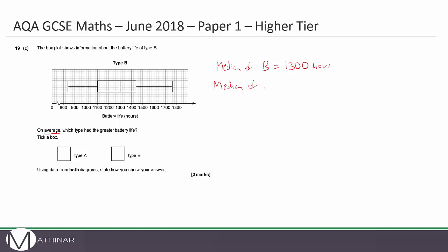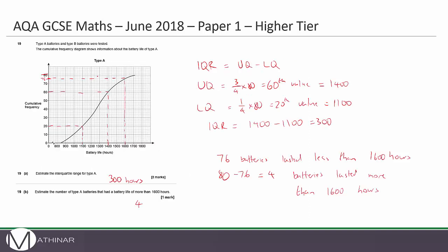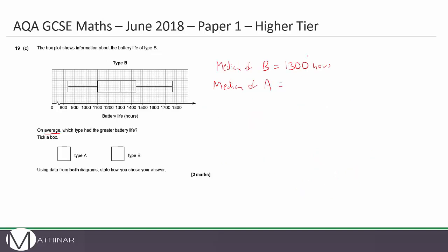Now we need to work out the median of A. So the median of A is halfway along. So half of 80 is 40. So we go along at 40. And then if we go down, I would say that's about 1,260. The median of A is 1,260 hours.